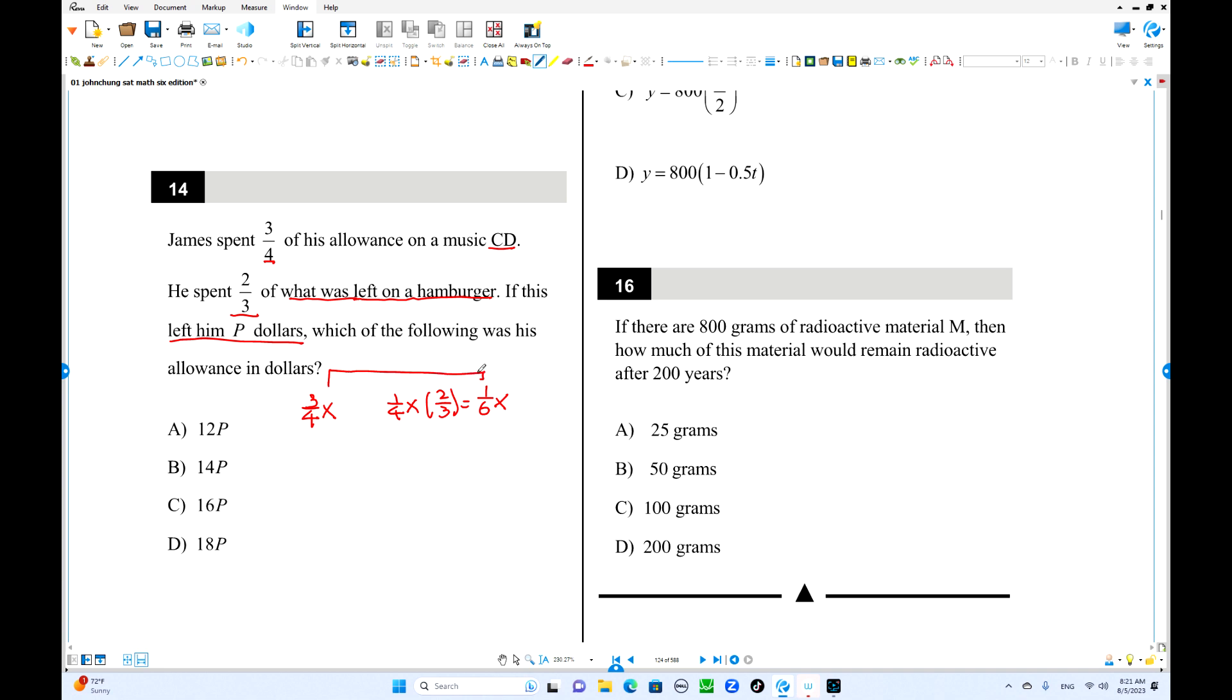This one is 9 over 12x, this is 2 over 12x. He spent total of 11 over 12x. 1 over 12x is left, that equals p dollars. Times 12, 12x equals 12p, sorry, x equals 12p, right, where p stands.